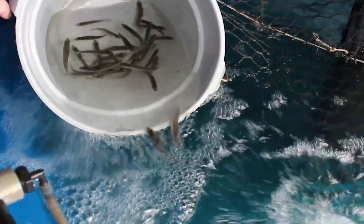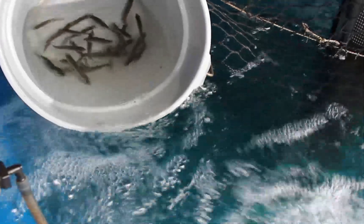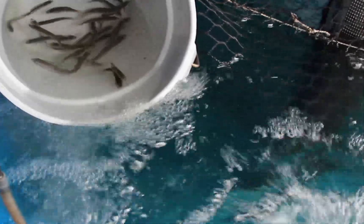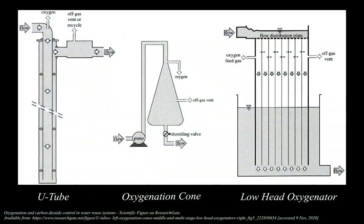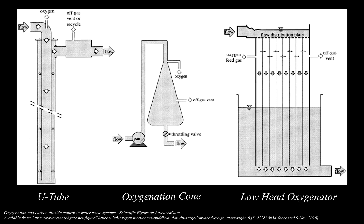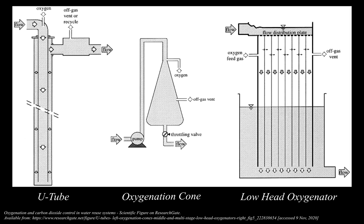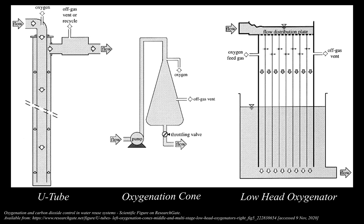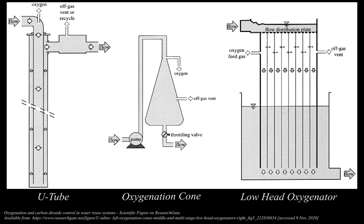Traditional diffused aeration is limited by temperature, salinity, and altitude on oxygen solubility, and will generally not effectively support commercial fish densities. Various devices have been employed to raise oxygen further, such as low-head oxygenators, U-tubes, packed columns, and oxygenation cones.